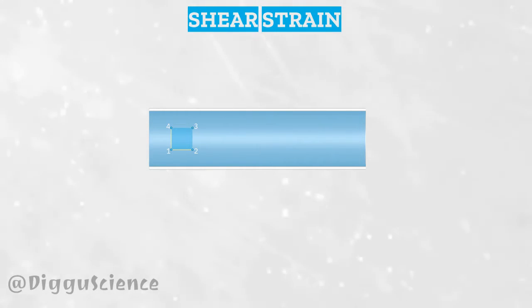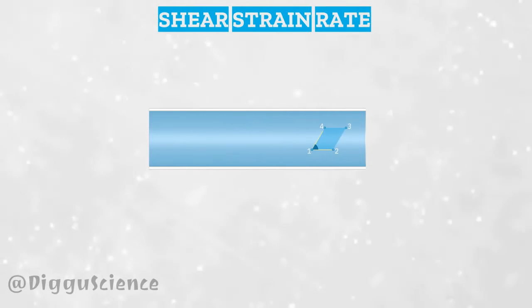Well, initially these two lines intersect at point 1 and form a 90-degree angle. Over time, the angle at point 1 decreases. Well, this measure of angle reduction is known as shear strain rate.